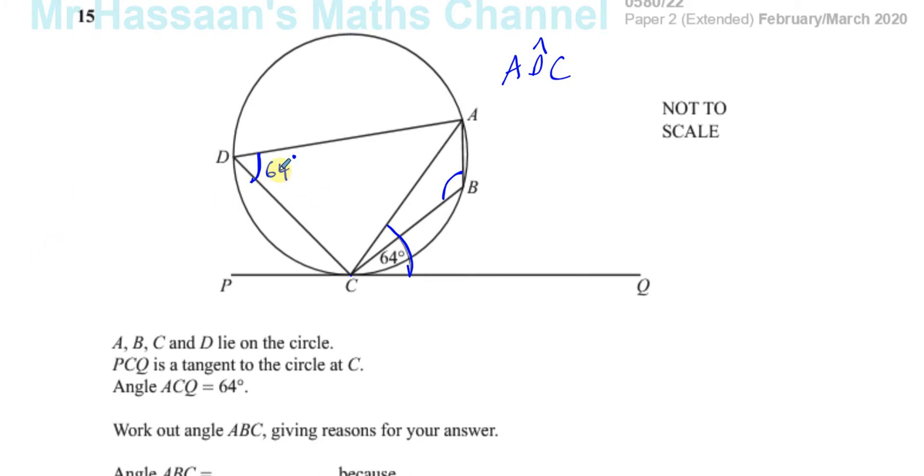All right, and because this is a cyclic quadrilateral, the opposite angles in a cyclic quadrilateral are supplementary. So we can say that the angle ABC, which we want to find, is equal to 180 minus 64, which gives you 116 degrees. 180 minus 60 is 120, minus another 4, 116.